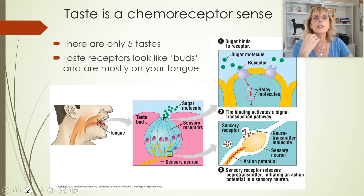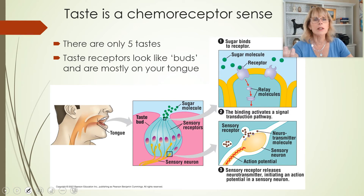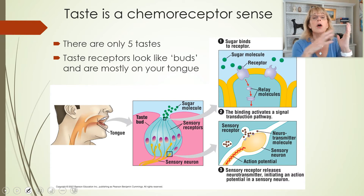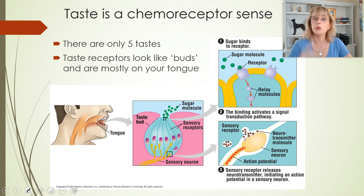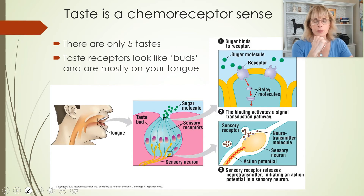Our tongue can only detect five different flavors. That always seemed baffling — my friend's lasagna tastes really different from mine, but it's not my tongue telling me that difference. Your tongue is not capable of distinguishing that many flavors. Most of your experience of food comes from your nose. Our sense of smell is more of our experience of flavor than what's going on in our tongue — the tongue can only detect five different things.